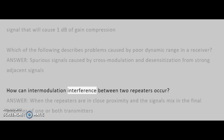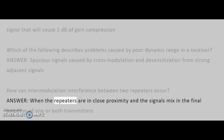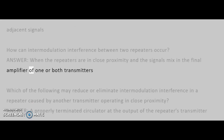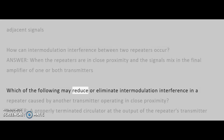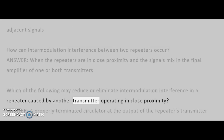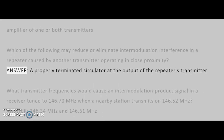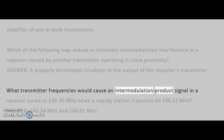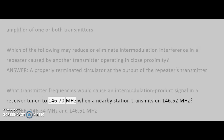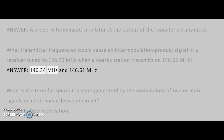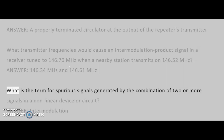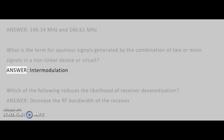How can intermodulation interference between two repeaters occur? Answer: When the repeaters are in close proximity and the signals mix in the final amplifier of one or both transmitters. Which of the following may reduce or eliminate intermodulation interference in a repeater caused by another transmitter operating in close proximity? Answer: A properly terminated circulator at the output of the repeater's transmitter. What transmitter frequencies would cause an intermodulation product signal in a receiver tuned to 146.70 MHz when a nearby station transmits on 146.52 MHz? Answer: 146.34 MHz and 146.61 MHz. What is the term for spurious signals generated by the combination of two or more signals in a non-linear device or circuit? Answer: Intermodulation.